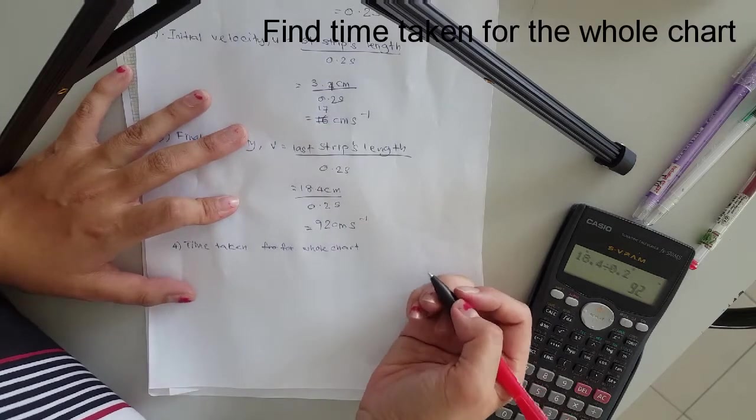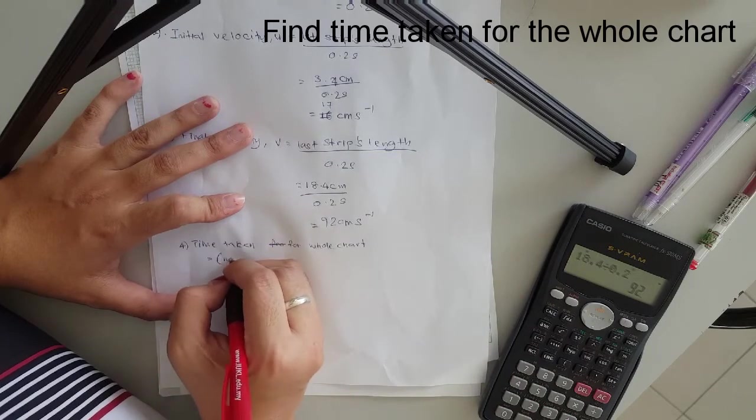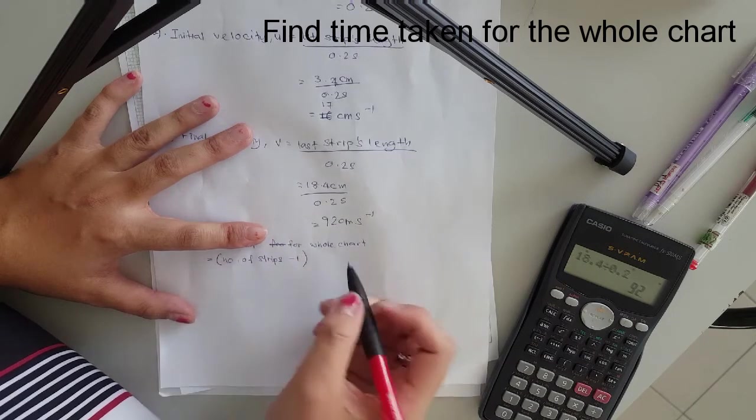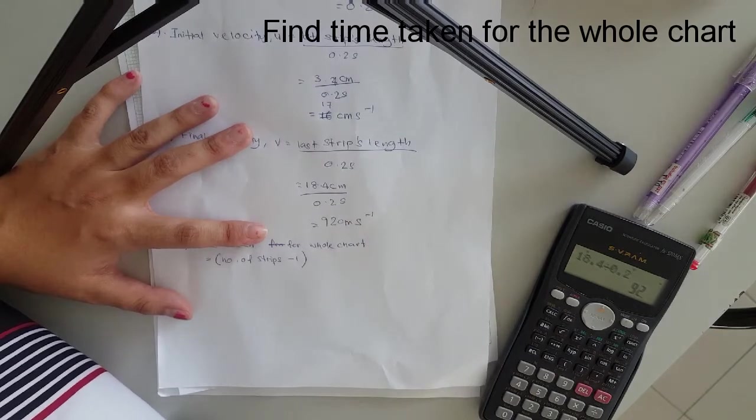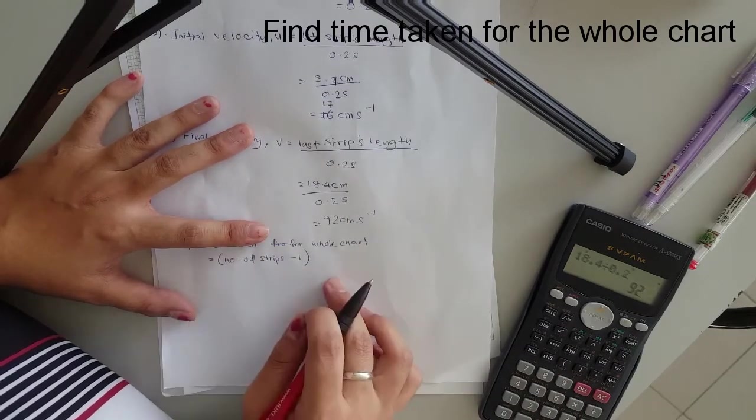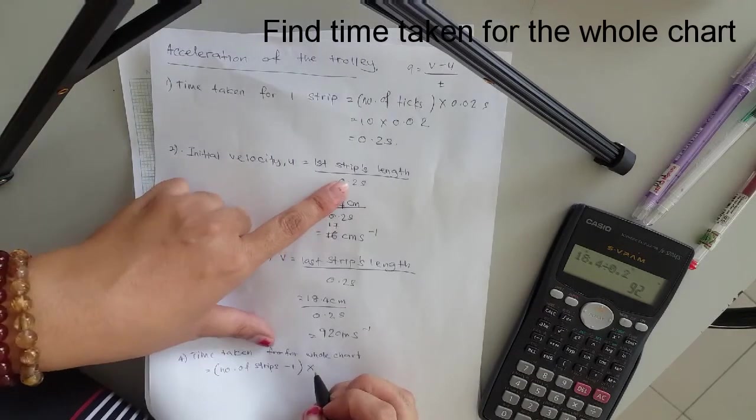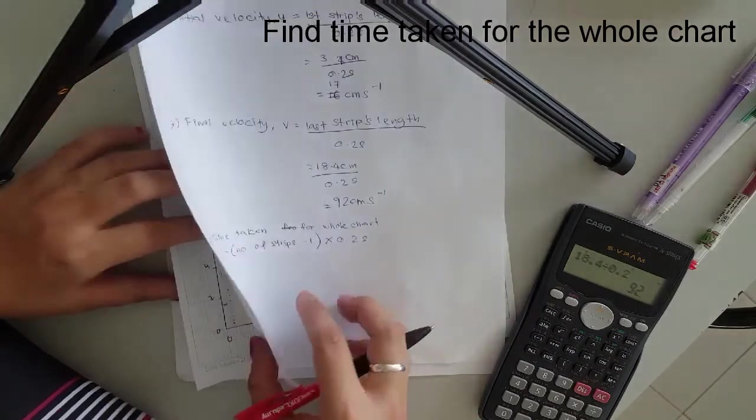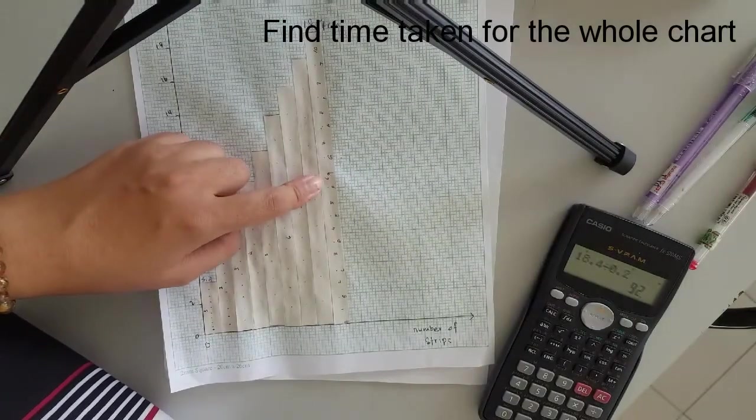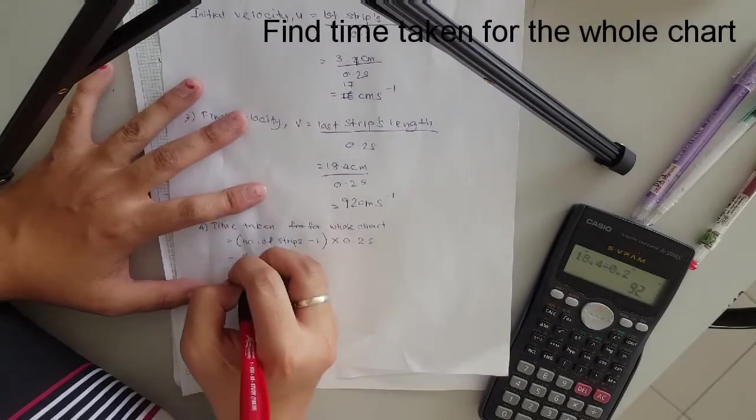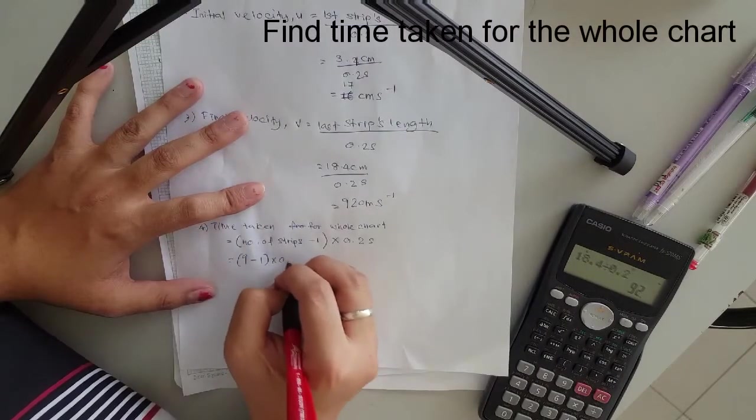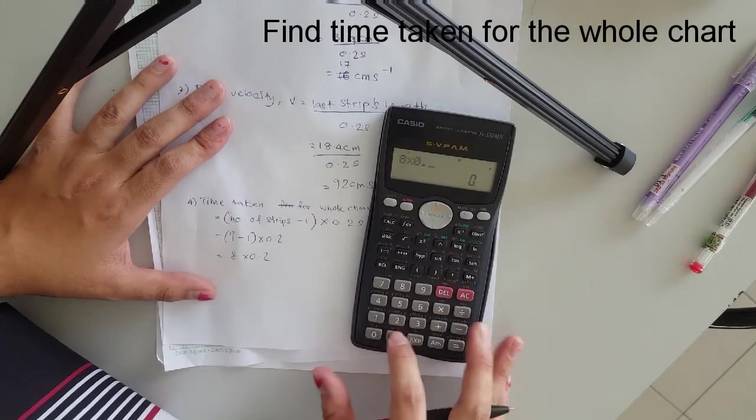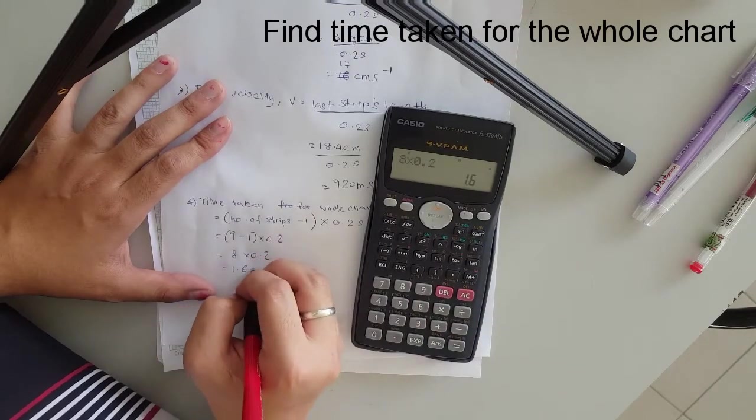So we can't use number of ticks already over here. So because there are so many ticks over there. So it's number of strips minus 1. Because why minus 1 is because the time taken is supposed to be by average. So so we take it minus 1. Times the time taken for one strip, which is 0.2 seconds. So how many strips we have? 9. So 9 minus 1 times 0.2. So that's 8 times 0.2. 1.6 seconds.